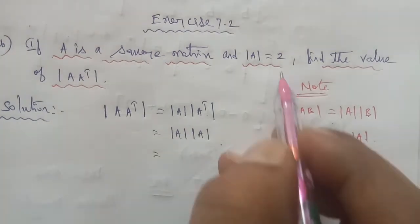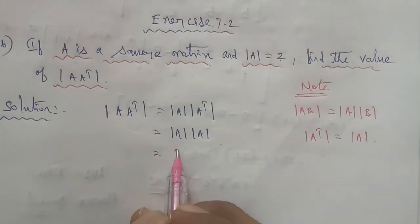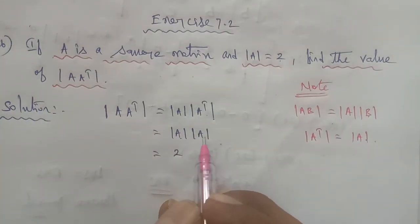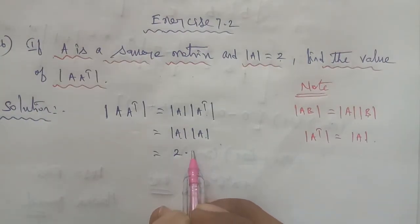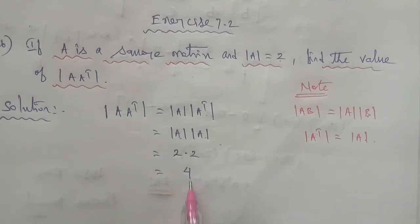The determinant of A is given in the question as 2. So determinant of A is 2, times 2 equals 4. The final value is 4.